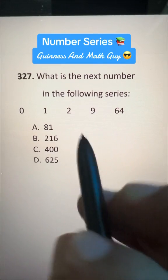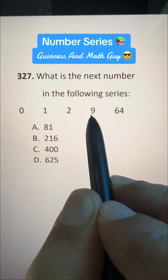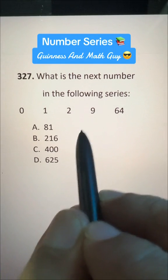What is the next number in the following series? If we go from left to right, we have plus 1, then plus 1, then plus 7, then plus 55. Doesn't make any sense.